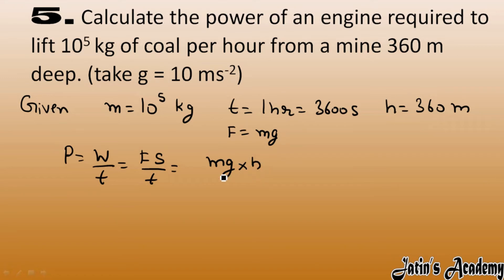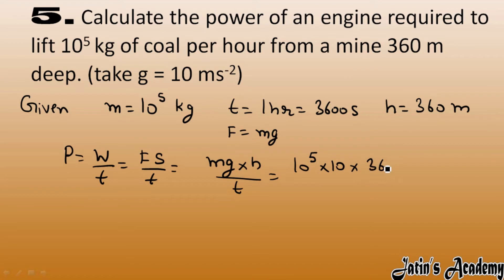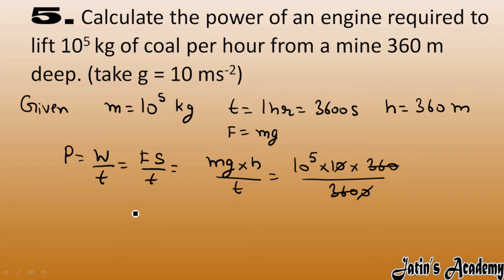Putting in the values: Power = (10⁵ × 10 × 360) / 3600. The 3600 in the denominator cancels with 360, simplifying the calculation, giving Power = 10⁵ watts.